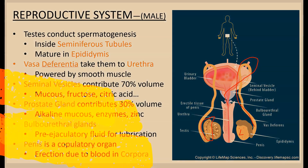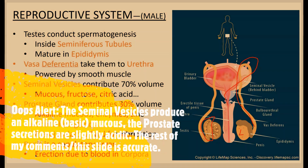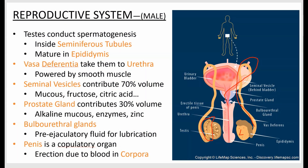The seminal vesicles are paired glands that produce about 70% of the ejaculate, including mucus for volume and fructose to power the sperm cells. The prostate gland produces an alkaline mucus to increase the pH of the female reproductive system, which is fairly acidic as an antibacterial measure. The bulbourethral glands are a small paired structure that don't contribute much volume but produce a pre-ejaculatory fluid that acts as a lubricant.